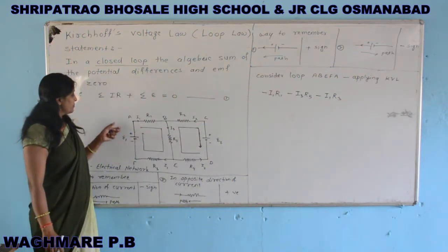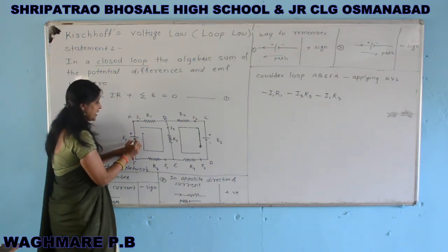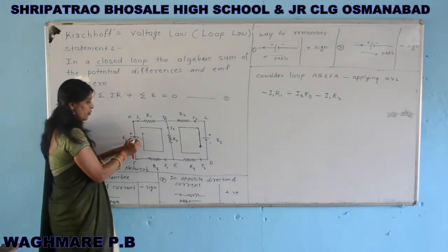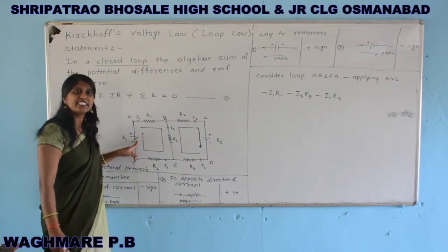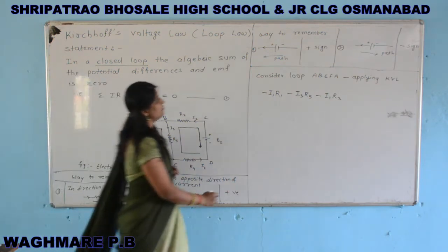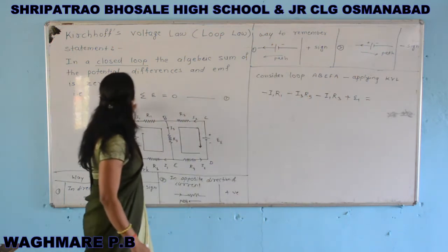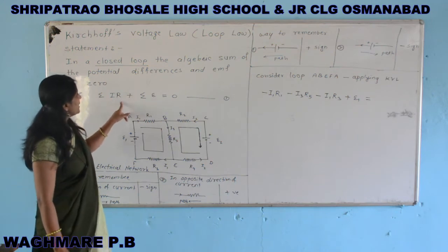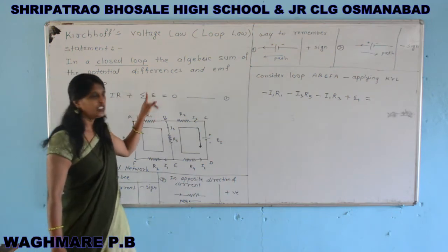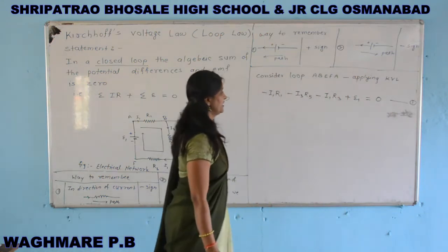Now we take the EMF of cell E1. We traverse from the negative terminal to the positive terminal, so the EMF is taken as positive: plus E1. By Kirchhoff's voltage law, the algebraic sum of potential differences and EMF equals zero. This is equation 1.